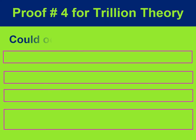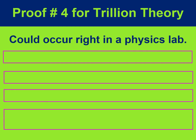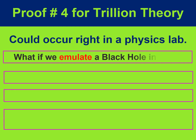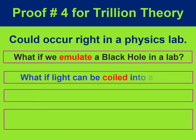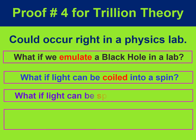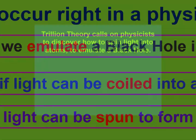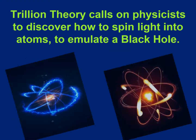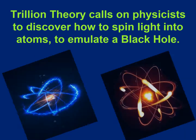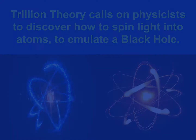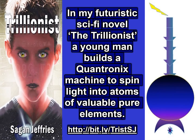Proof number four for Trillion Theory could occur right in a physics lab. What if we emulate a black hole in a lab? What if light can be coiled into a spin? What if light can be spun to form matter? This would prove the reason that black holes attract and spin light is to forge atoms. Trillion Theory calls on physicists to discover how to spin light into atoms to emulate a black hole. In my futuristic sci-fi novel The Trillionist, a young man builds a quadronex machine to spin light into atoms of valuable pure elements.